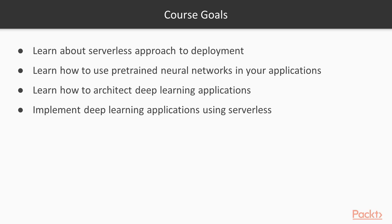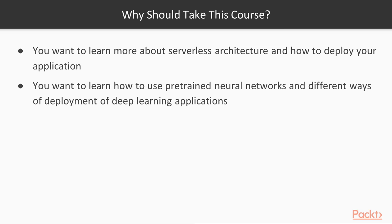There are the following goals for this course. First, learn about serverless and its use cases and understand if serverless can be useful in your case. Learn how to use pre-trained neural networks in your application, where to find them and how to integrate them. Learn how to architect deep learning applications and what cloud patterns can be useful for your backend. Deploy several deep learning applications and become familiar with AWS services which are used in conjunction with AWS Lambda in production.